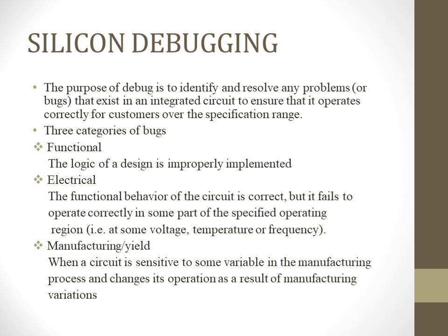For example, a circuit's operation may be sensitive to the gate length used for a transistor and may fail due to manufacturing variations between different dies. The goal of the debug is to find all bugs and eliminate them through design changes or other means before selling the device to a customer. This class briefly describes the process, design features, tools and methods used to accomplish this goal.